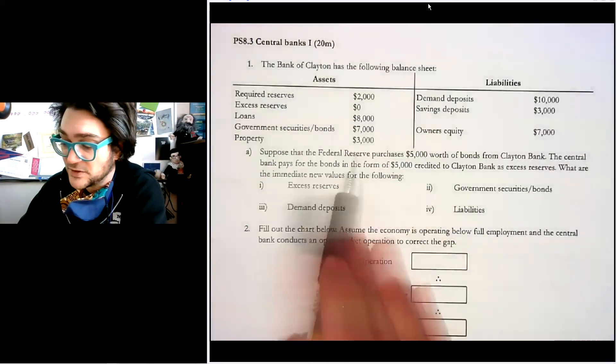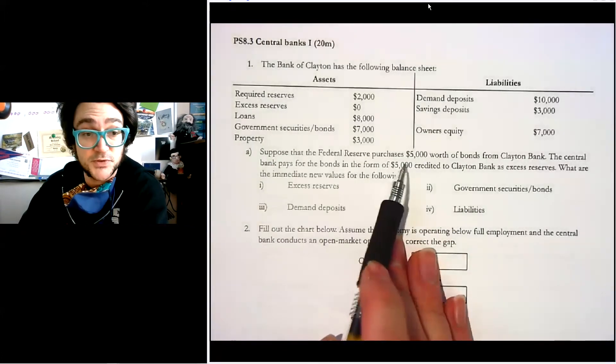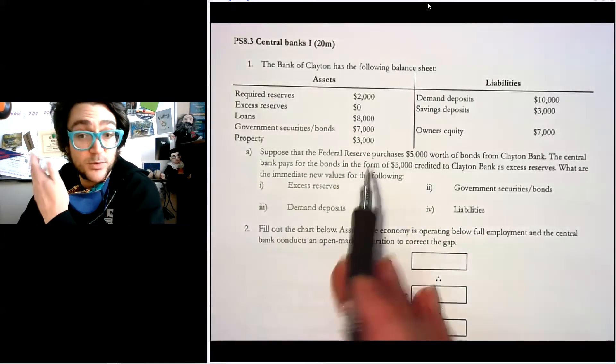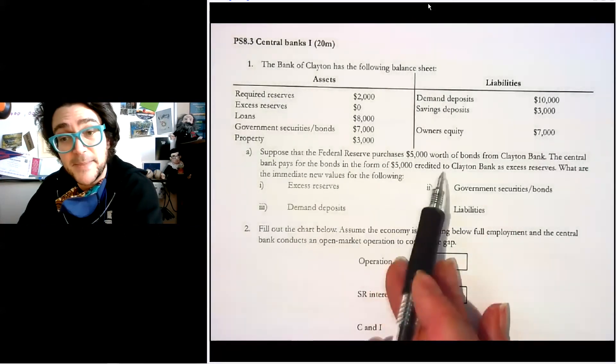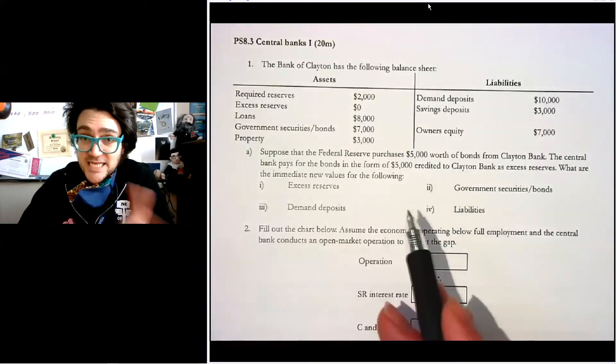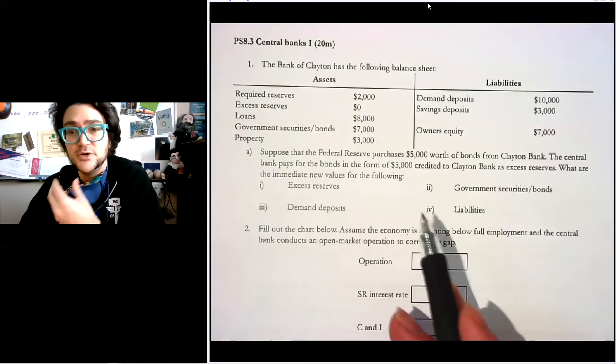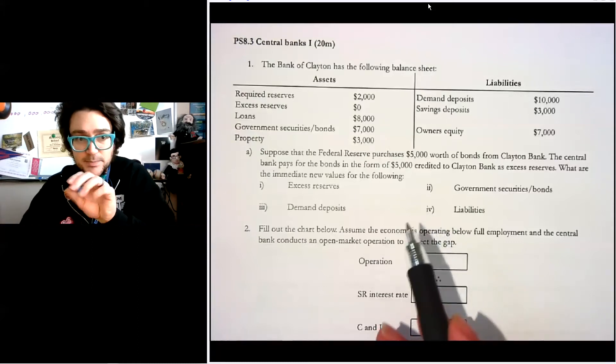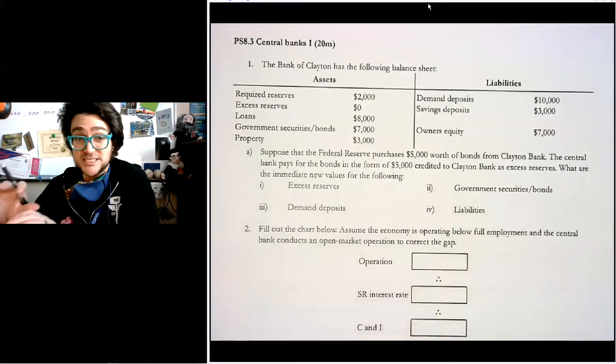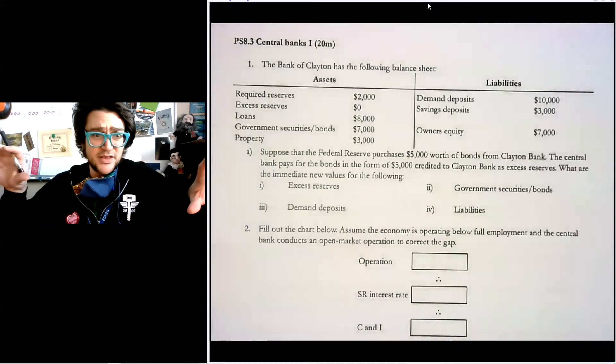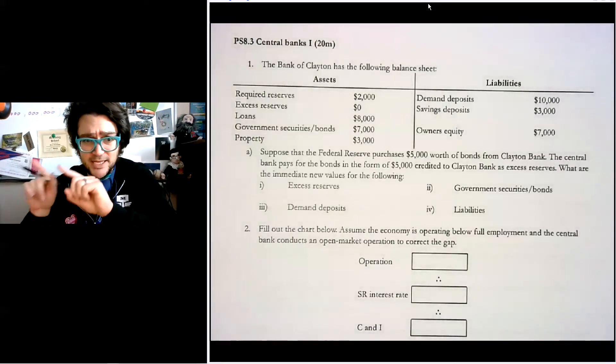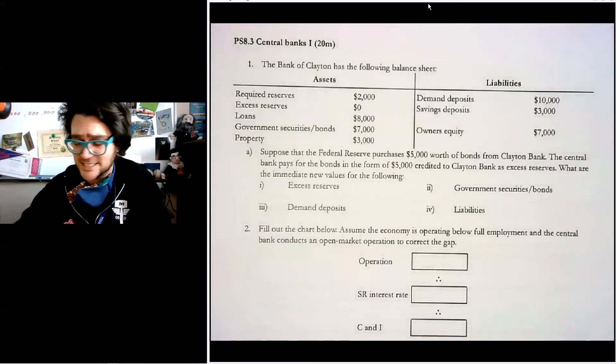The first thing here says, suppose the Federal Reserve purchases $5,000 worth of bonds from Clayton Bank. The central bank pays for the bonds in the form of $5,000 credited to Clayton Bank as excess reserves. So that's an open market operation, exactly how we talked about it in the lecture video. They buy bonds and they give them excess reserves. What are the immediate new values for the following? So this is basically saying, don't multiply anything out, don't do any of this money multiplier nonsense. Just tell me how did the bank balance sheet change?